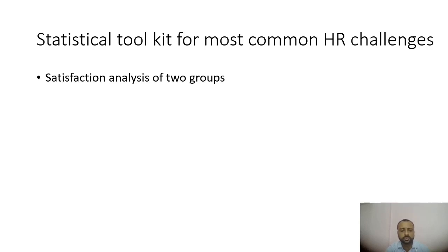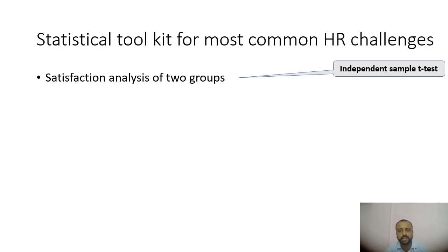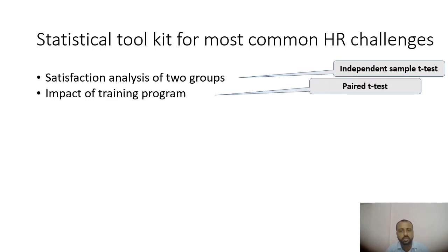Organizations are successfully able to capture data on satisfaction surveys, but after that you have to analyze it. You have to find out whether the satisfaction level of one department differs from another. In these kinds of problems, you may simply use an independent sample t-test. Similarly, if you have conducted a training program and want to measure its impact, the most common way is to get feedback before and after the training and see the significant difference, which can be easily measured using a paired t-test.